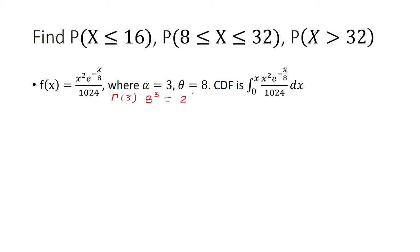8 to the third is 512, so that was 1024. That's where you get the denominator. And the numerator, you had x being raised to the alpha minus 1, and then e to negative x over theta.